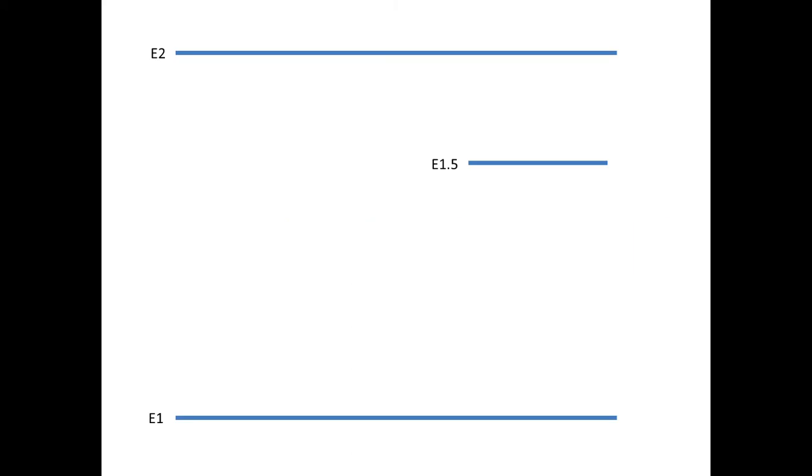An example for us to have a look at. Here you have a material with three energy levels: E1, E2, and E1.5. I have called it E1.5 as this is a metastable state, which means it is higher in energy than the ground state but stable enough that it can accommodate electrons.